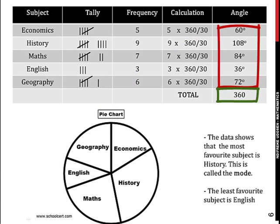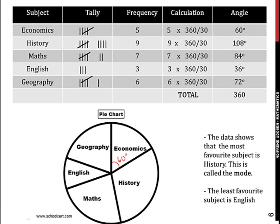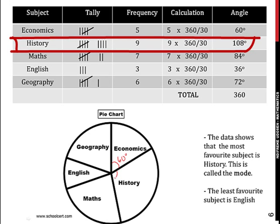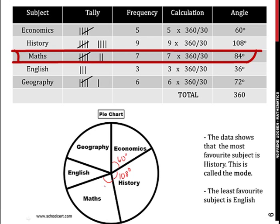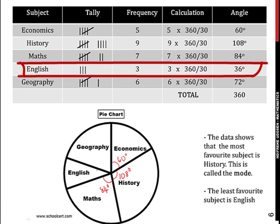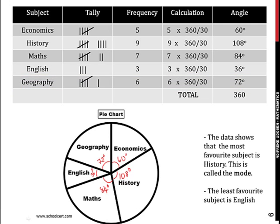Using a protractor and a ruler, alongside a compass, you construct the following pie chart. So the economics angle, this angle here, is the angle 60 degrees. You construct using your protractor and compass the angle for history, which is 108 degrees. You construct for mathematics, which is 84 degrees. You construct 36 degrees for English, and you construct 72 degrees for geography. This is the pie chart.